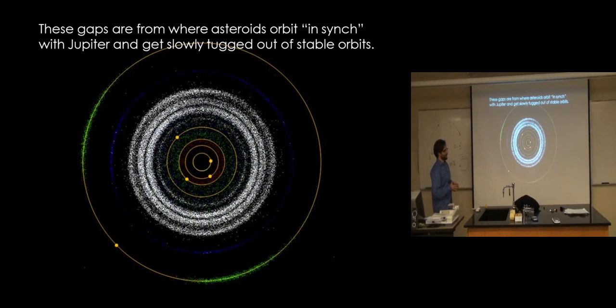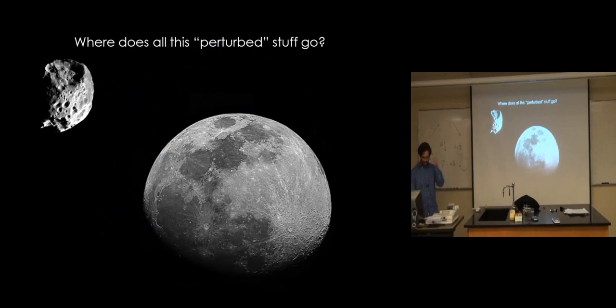Oh, that's a good question. I don't know. Where do you think they go? Might fall into Jupiter. Yeah, they just get destabilized. They get kind of nudged out of their nice stable orbit. Where does all this perturbed stuff go? And this picture is a little bit more leading.